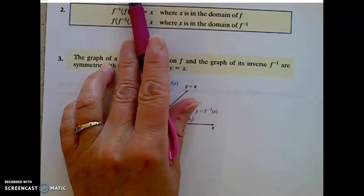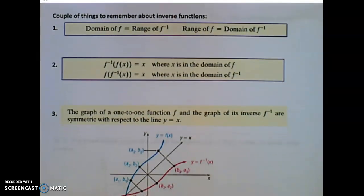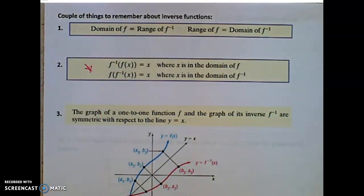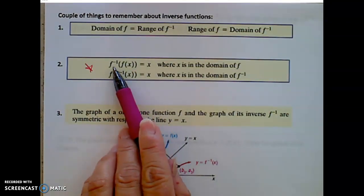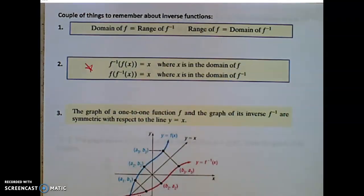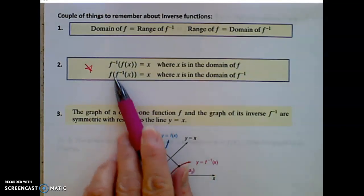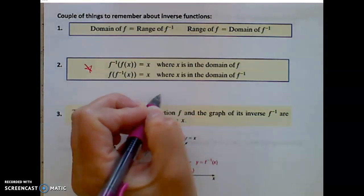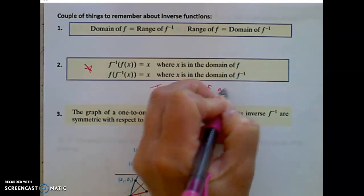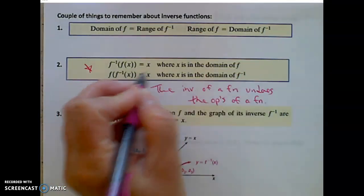Just a couple of reminders. The domain of the original function becomes the range of the inverse and vice versa — the range of a function becomes the domain of the inverse; that's the switching. This is an important test to confirm that a function is an inverse of the other. If I plug x into a function and then plug that output into its inverse — that composition of functions — if I simply get that input out, then those two functions are inverses. Likewise, if I plug an x value into an inverse and get output that becomes an input into the function, and if I simply get that same input out, then those functions are undoing each other. The inverse of a function undoes the operations of a function.